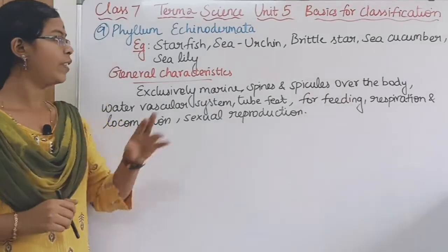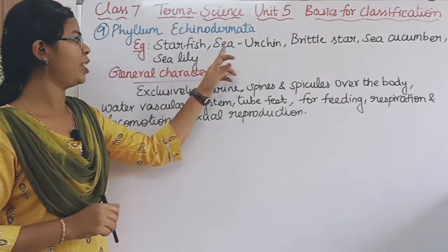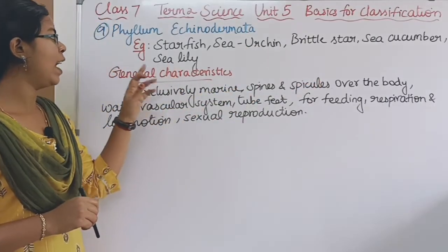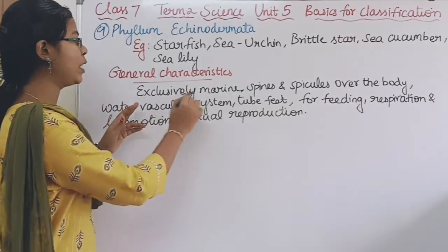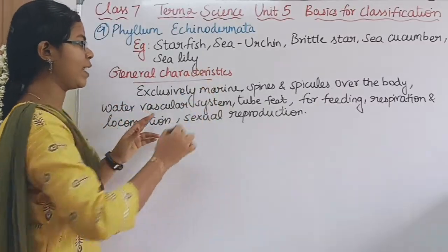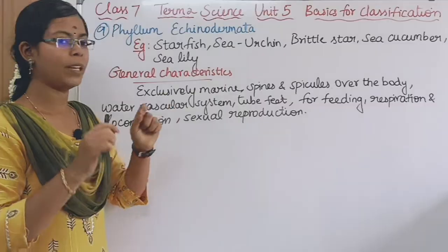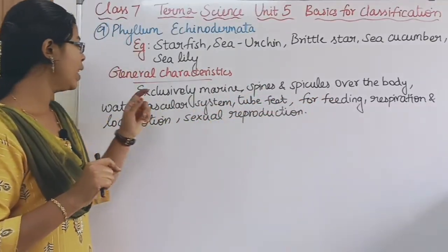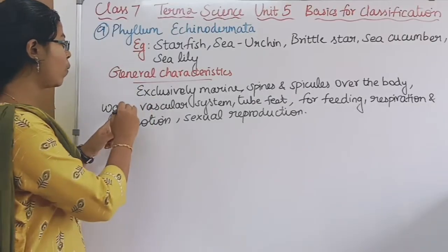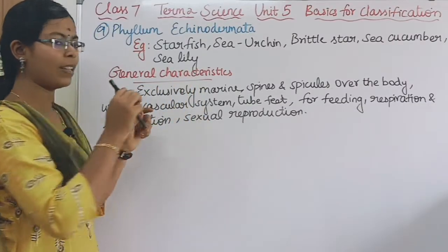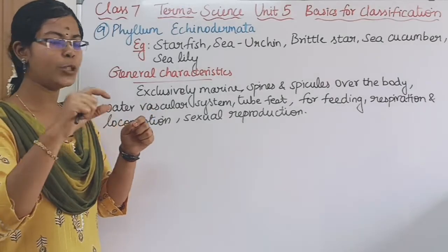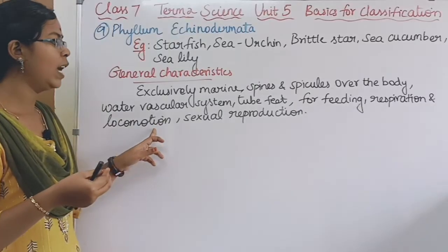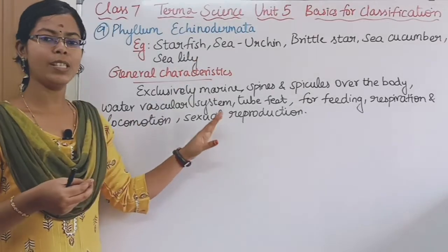The ninth phylum division is Echinodermata. For example, starfish, sea cucumber, and sea lily. General characteristics: they are exclusively marine — that is, they live in sea water. They have a water vascular system. Starfish have tube feet used for feeding, respiration, and locomotion. The method of reproduction is the sexual method.